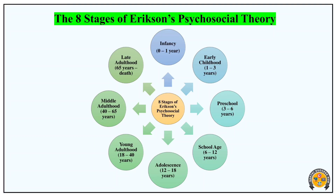The eight stages are: infancy, early childhood, preschool, school age, adolescence, young adulthood, middle adulthood, and late adulthood. There are two opposite qualities in each stage.